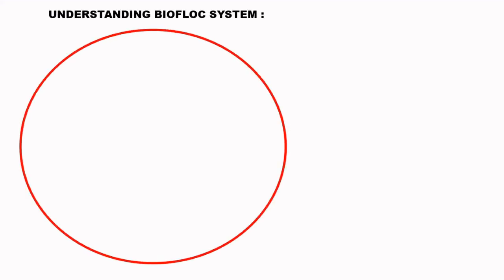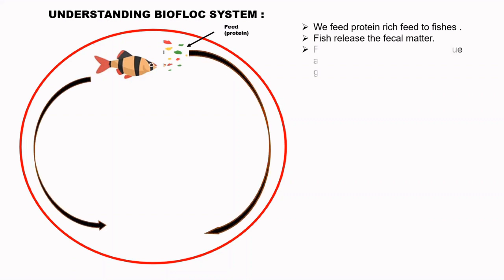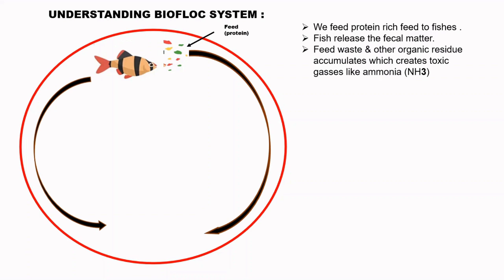Understanding the Biflux System. We feed protein-rich feed to the fishes. Fish releases the faecal matter. Feed waste and other organic residue accumulates, which creates toxic gases like ammonia.